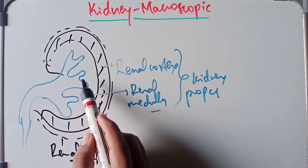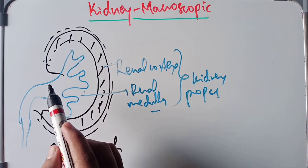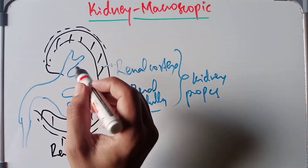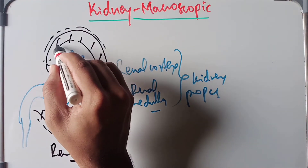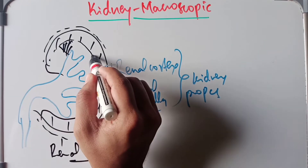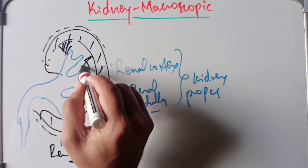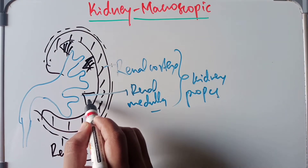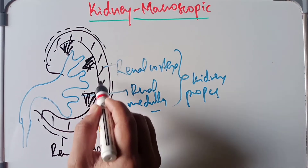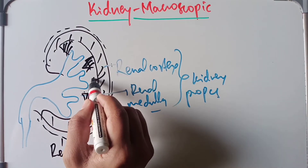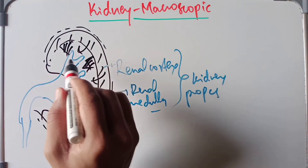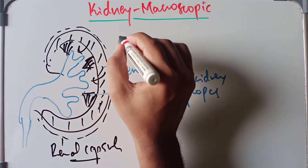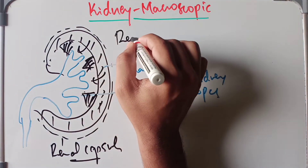The cortex is located just below the renal capsule and it extends between the renal pyramids. The parts of cortex that extend between the pyramids are called the renal columns, or columns of Bertini.